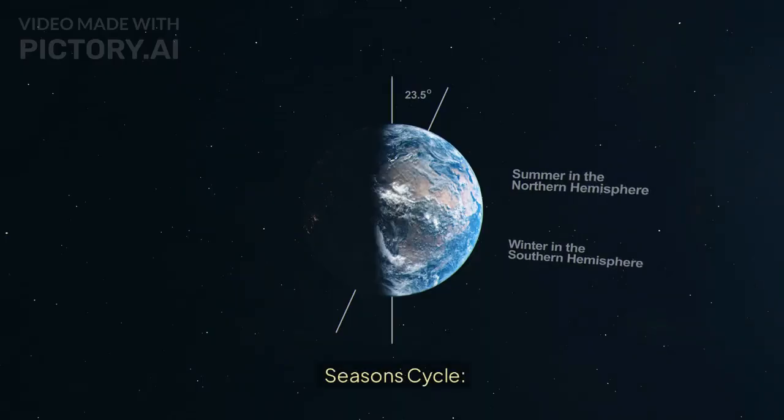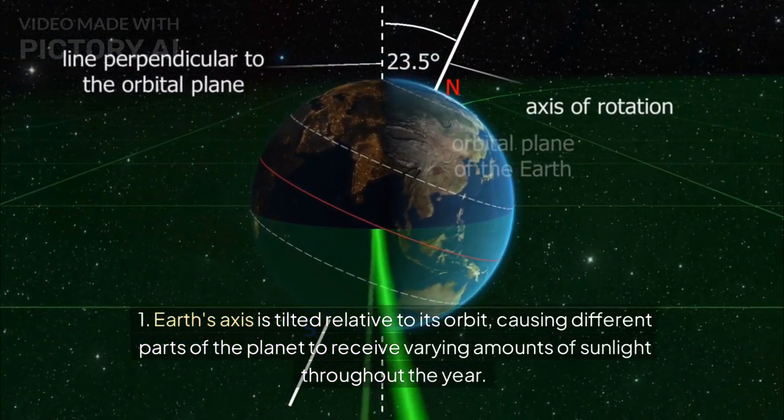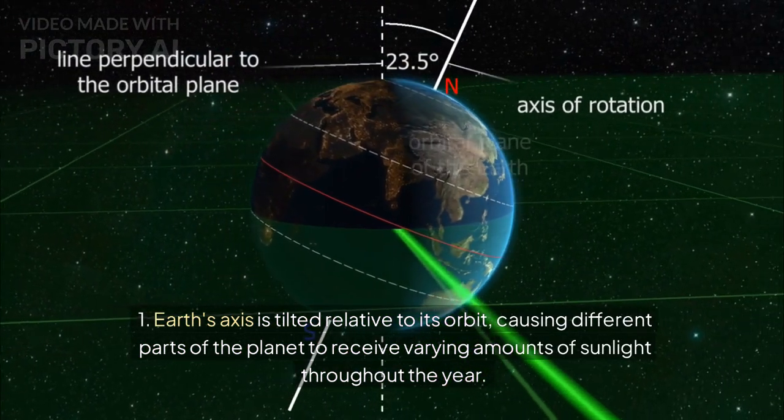Season cycle. Earth's axis is tilted relative to its orbit, causing different parts of the planet to receive varying amounts of sunlight throughout the year.